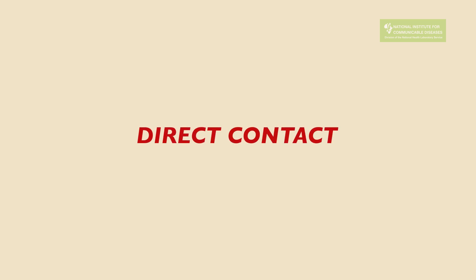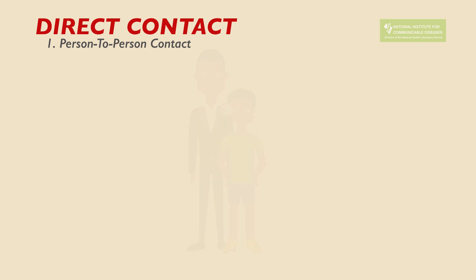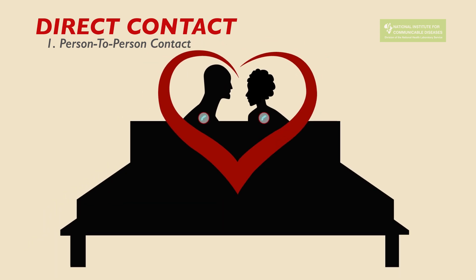Infectious diseases are often spread through direct contact. The types of direct contact include the following. Person-to-person contact: infectious diseases are commonly transmitted through person-to-person contact. Transmission occurs when an infected person touches or exchanges body fluids with someone else. This can happen before an infected person is aware of the illness. Sexually transmitted diseases and HIV can be transmitted this way.